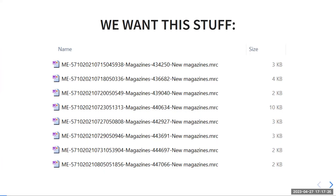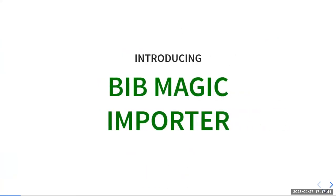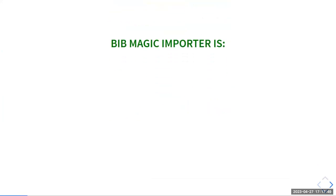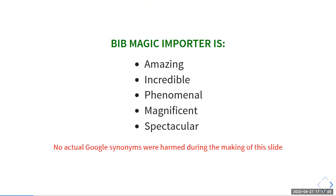The whole premise here is that we want this stuff — does this look familiar to anybody? Some files, Mark files. We want that stuff to look like this other stuff. That's what we're doing. Introducing the Bib Magic Importer. The Bib Magic Importer is amazing, incredible, phenomenal, magnificent, spectacular. No actual Google citizens were harmed during the making of this slide.